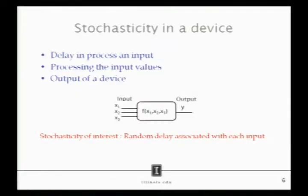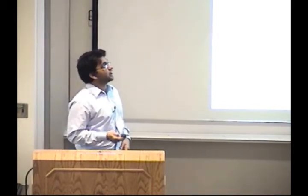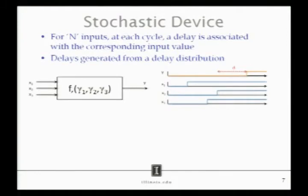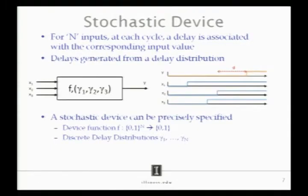Let's get started on the model. The stochasticity in a device we are considering is in the delay in input values. Suppose that we have a device which takes a set of inputs and gives an output. We assume a delay associated with each of the inputs. And the delay is the reflection of the time taken for the input to get reflected at the output. If you have an input for a device at each cycle, a delay is associated with the input. In the given figure, assume that block f is the AND of the three inputs that we get. That is, f is the output y is x1 and x2 and x3. We can see that there is a delay d associated with y changing from 0 to 1 even when x1, x2 and x3 all three change to 1. This is because of the delays and these delays are generated from a delay distribution that is predefined as gamma.